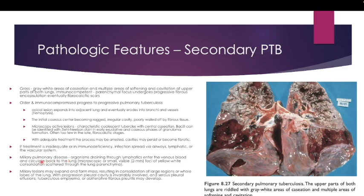This can also lead to miliary pulmonary tuberculosis, where the organism drains through lymphatic channels, enters venous blood, and circulates back to the lung, appearing as microscopic 2mm foci of yellow-white consolidation scattered throughout the lung parenchyma. On chest X-ray, this appears as small whitish dots — termed millets — hence the name miliary tuberculosis.